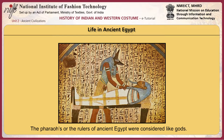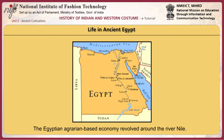The pharaohs, or rulers of ancient Egypt, were considered like gods. The priests were next in the social order, followed by nobility, military, scribes, craftsmen, peasants and laborers. The Egyptian agrarian-based economy revolved around the river Nile. During times when no farming could be done, the peasants would work off their taxes by working on building projects for the pharaohs, community or government.